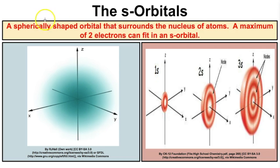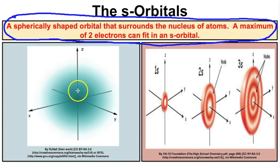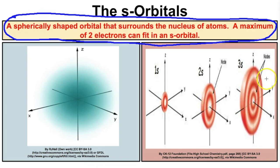Let's start talking about the s orbital. The s orbital is a spherically shaped orbital that surrounds the nucleus of atoms and it can hold a maximum of two electrons. We can see the s orbital here where electrons can hang out, spinning in opposite directions if there's more than one. There's an s orbital in the first energy level, one in the second, and one in the third — each holding a maximum of two electrons.